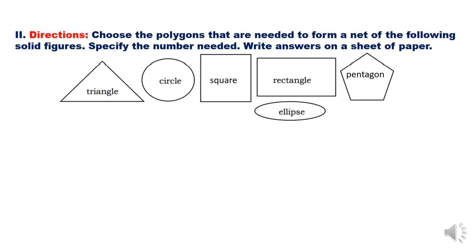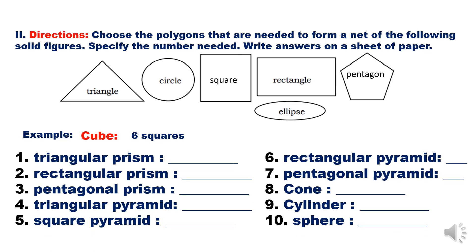Choose the polygons that are needed to form a net of the following solid figures. Specify the number needed. Write the answers on a sheet of paper. Example: Cube - we need 6 squares for cube. Number 1: triangular prism - we need 2 triangles and 3 rectangles. Number 2: rectangular prism - we need 6 rectangles. For pentagonal prism, we need 2 pentagons and 5 rectangles. Then try to answer number 4 to 10 and time starts now.